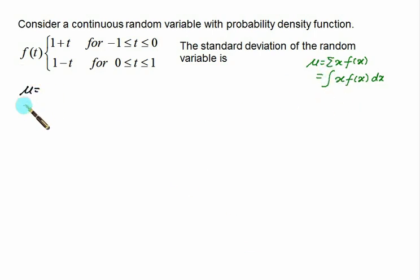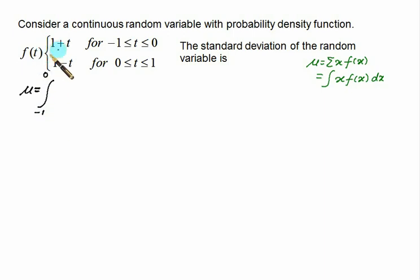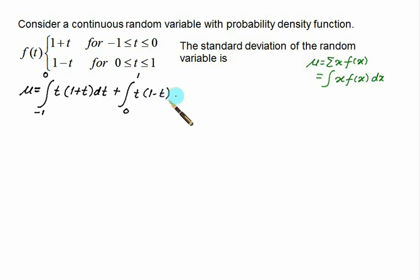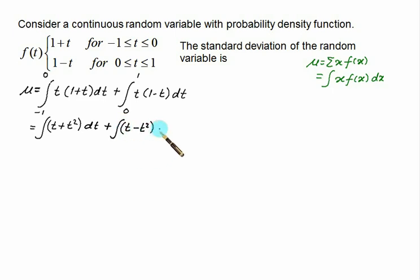For continuous distributions, μ = integral of x·f(x) dx. Since the function is defined on two intervals, we compute μ = integral from −1 to 0 of t(1+t) dt plus integral from 0 to 1 of t(1−t) dt. Expanding, this becomes integral of (t + t²) dt plus integral of (t − t²) dt.